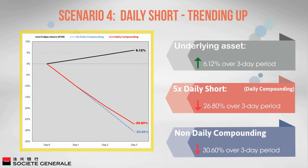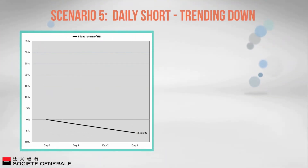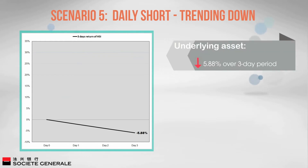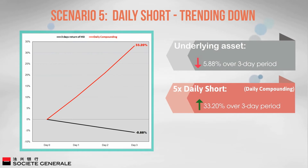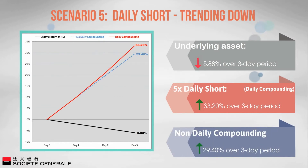Daily short — trending down: Assuming the market is trending down, the underlying asset's daily performance is negative 2% for three consecutive days. The underlying asset has fallen a total of 5.88% over the three-day period. But the five times daily short has increased 33.2%, which is 5.65 times the performance of the index (calculated as 33.2 divided by 5.88). This is because each day the return is taken from a progressively larger amount. Without compounding, the product would have increased 29.4% (5.88% × 5).